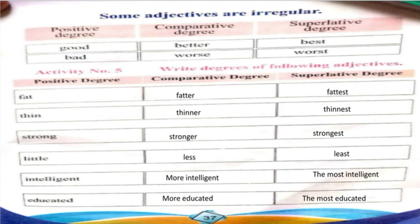Fat, Fatter, and Fattest. Thin, Thinner, and Thinnest. Strong, Stronger, and Strongest. Little, Less, and Least.